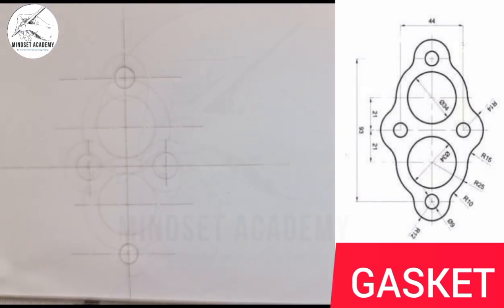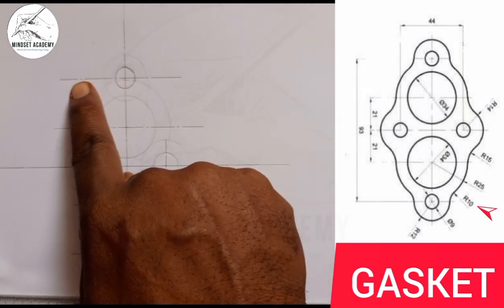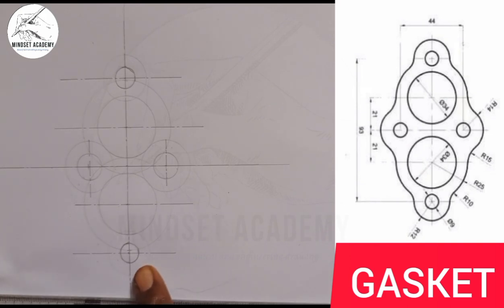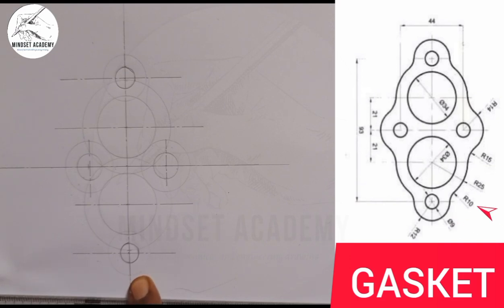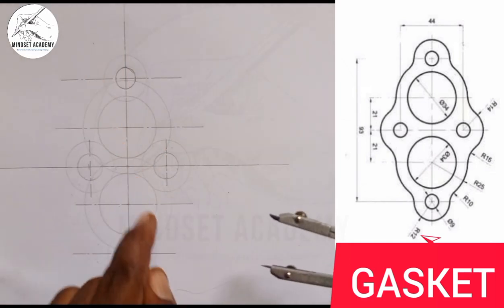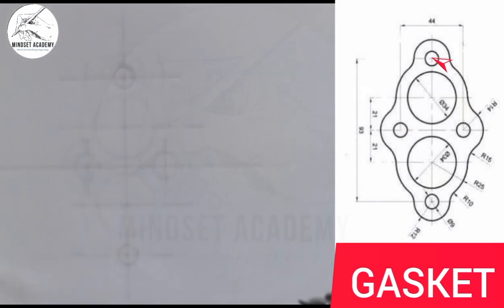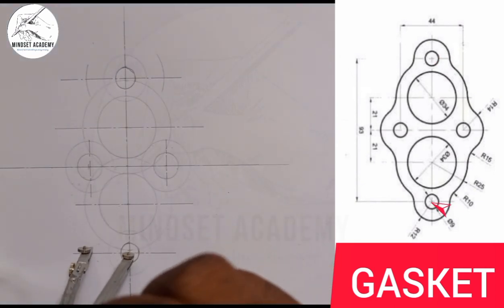Now we start drawing what connects each circle. This arc connecting these two circles has a radius of 10. Since it is going around the outside, it is external, so we add: radius of 10 plus the radius of this circle which is 12 gives us 22. I'll measure 22 on my metal rule — from zero, this is 20, 21, 22. I'll place it at the center of this circle and strike an arc on the left-hand side and the right-hand side.